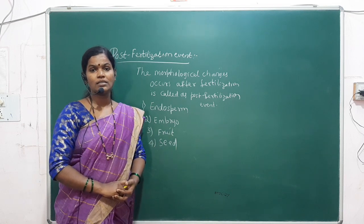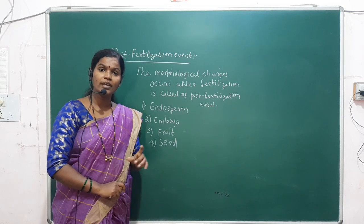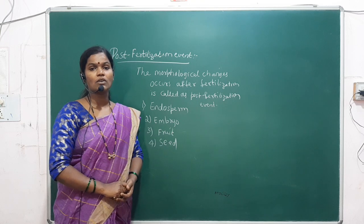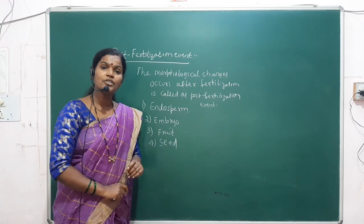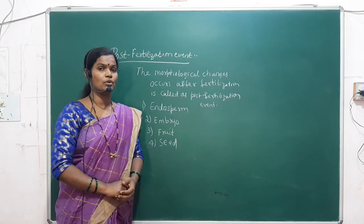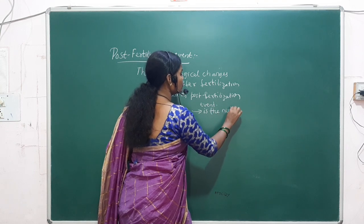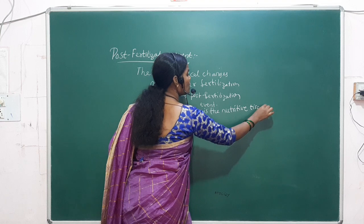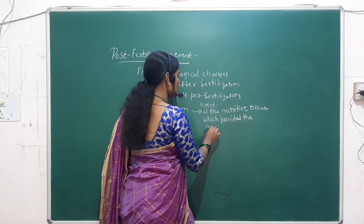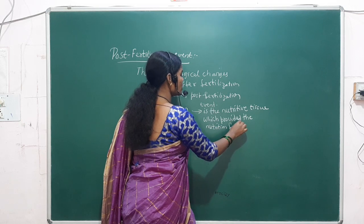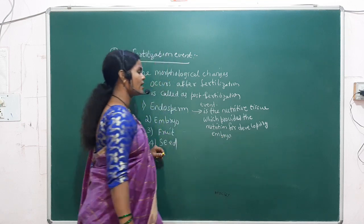As discussed in yesterday's class, when the secondary nuclei and one male gamete fuse, it forms the 3N number of chromosomes — the triploid condition — which is called endosperm. Endosperm is the nutritive tissue which provides nutrition for the developing embryo.